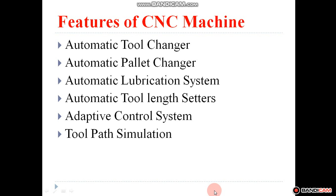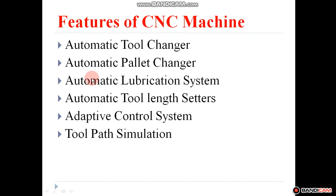The general features of CNC machines include: automatic tool changer, automatic pallet changer, automatic lubrication system, tool length setter for length compensation, adaptive control system, and tool path simulation. With the automatic tool changer, there is no need to remove the workpiece — different types of operations can be performed in a single setup using different tools, which are automatically changed as per the program. With the automatic pallet changer, loading and unloading of the workpiece is done automatically.